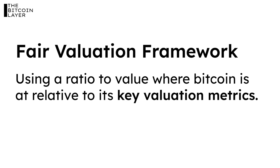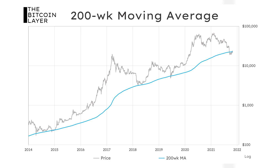We use a ratio to give us an average sense of where Bitcoin is trading relative to what we believe are its valuation metrics. Let's break down the three components of our fair valuation framework. Number one: we use the 200-week moving average. This is a long-term average price of Bitcoin — think the average price every day over the last four years, which gives us approximately a 200-week moving average.